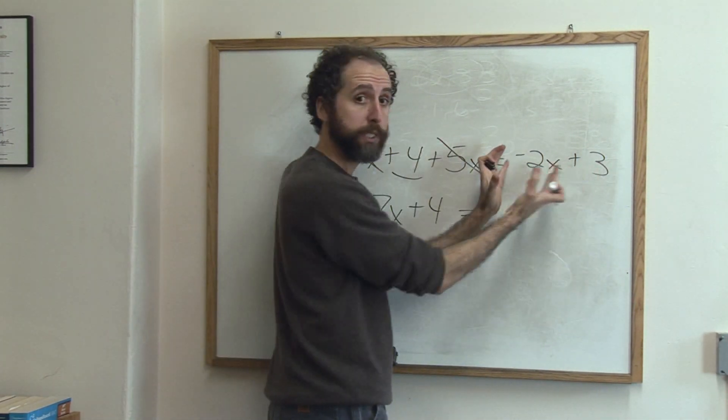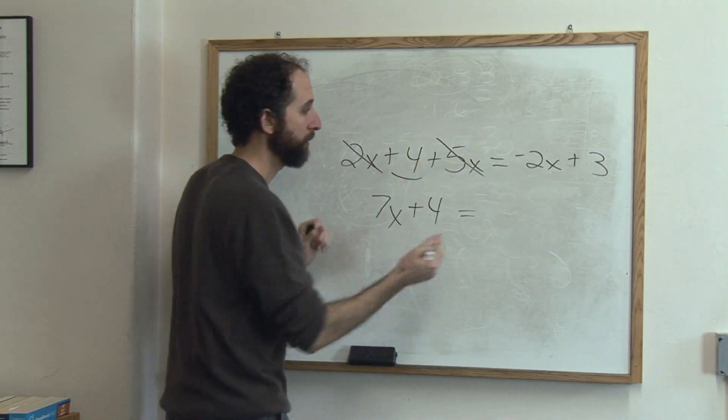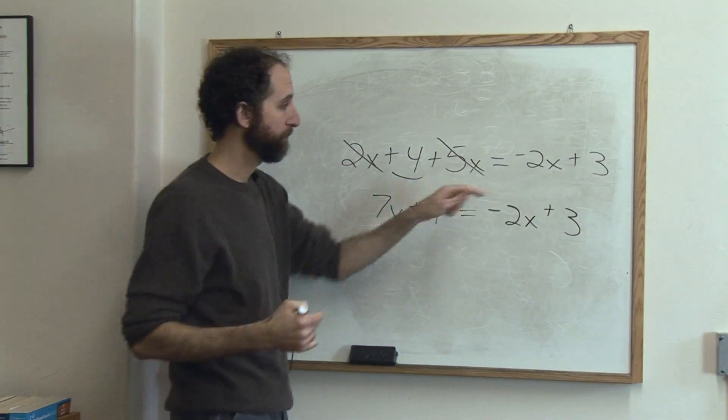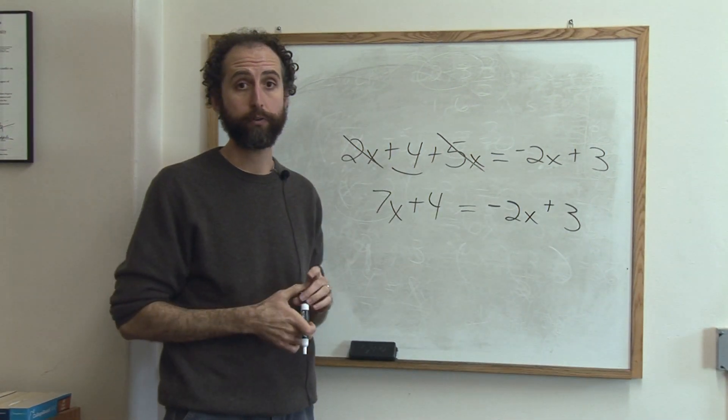I would collect terms on this side also, although here there's nothing to collect. We just have negative 2x plus 3. These are not like terms, because here we have an x and here we don't. So they don't combine, they're not like terms.